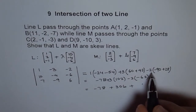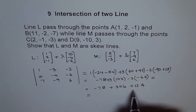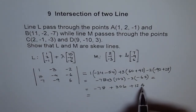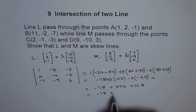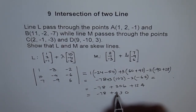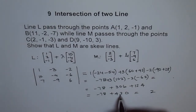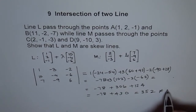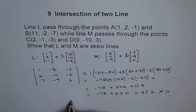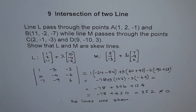Using the calculator: minus 78 plus the other terms gives 352, which is definitely not equal to zero. Therefore the lines are skew. That's how we can show that the lines are skew lines.